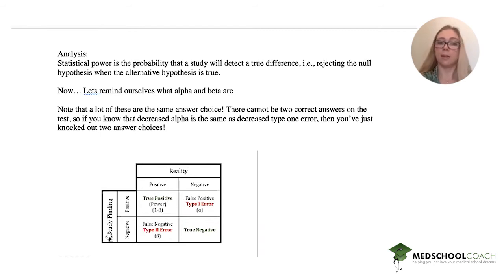Now what's beta? If a study finding is negative but in reality the answer is positive, then that's a false negative because the study found something falsely and that's beta. That's your type 2 error. So true positive is power is 1 minus beta and beta is false negative.